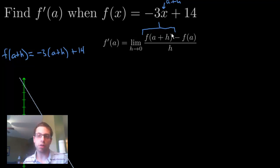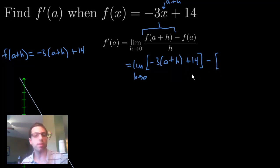And it's the limit as h goes to 0. So, we have -3(a + h) + 14. And you're going to minus, and I'm going to put these in brackets because there's a lot of parentheses going around now. f(a). Now, f(a), we already did, was -3a + 14. You're going to do all over h.